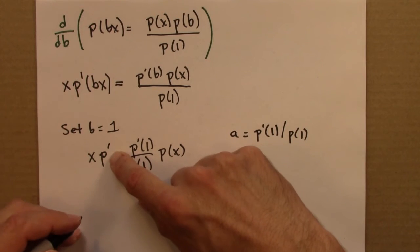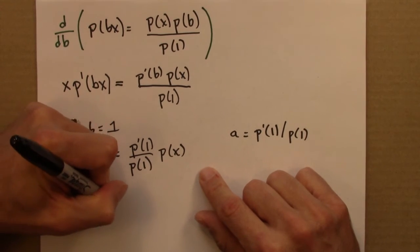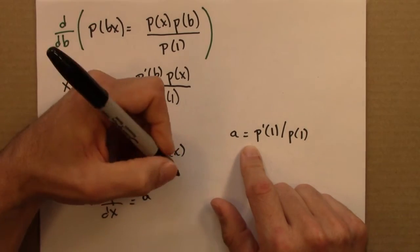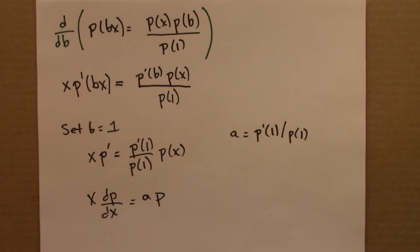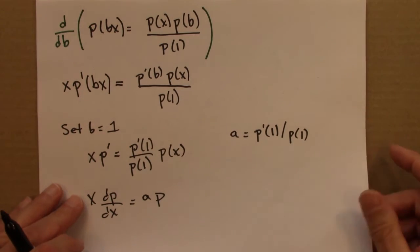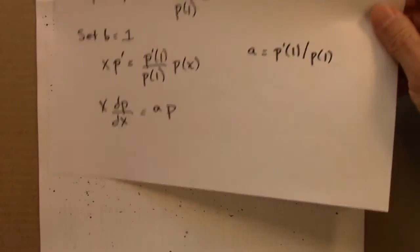So then I'm going to write P prime out. This is x dP/dx is aP. And this is a separable differential equation. So I'm going to pull all the P's to one side and all the x's over to the other side.